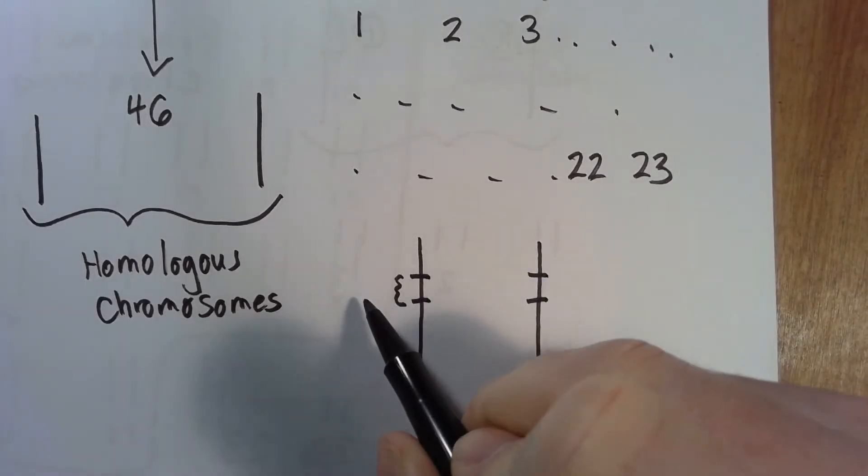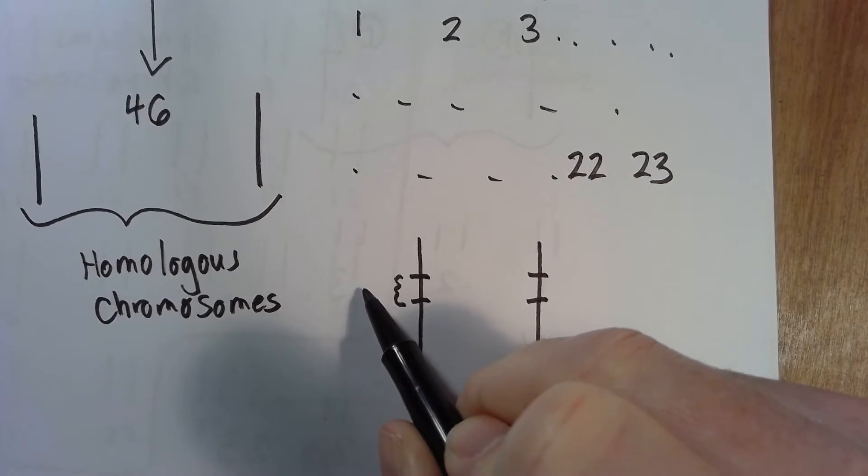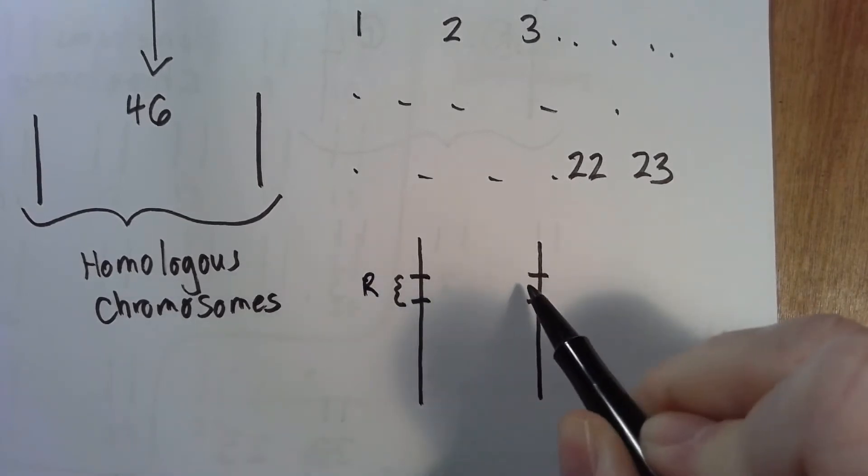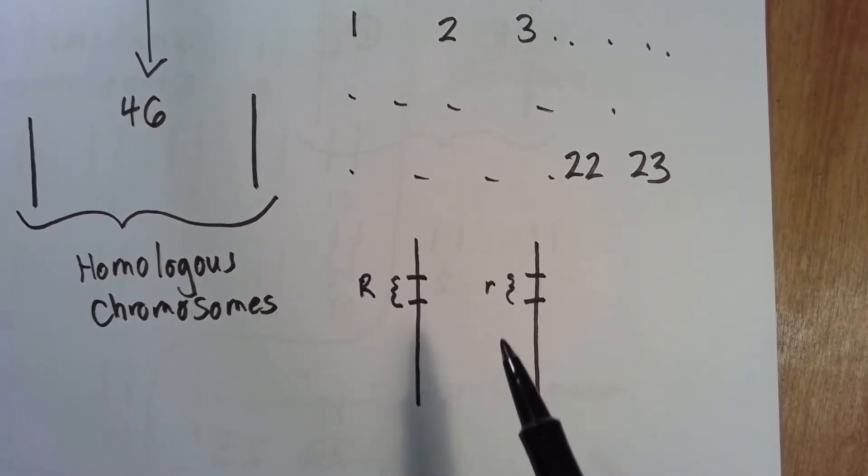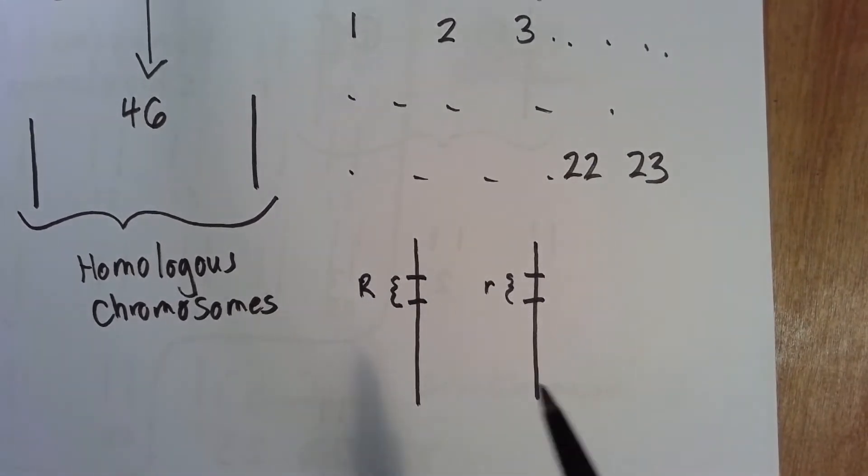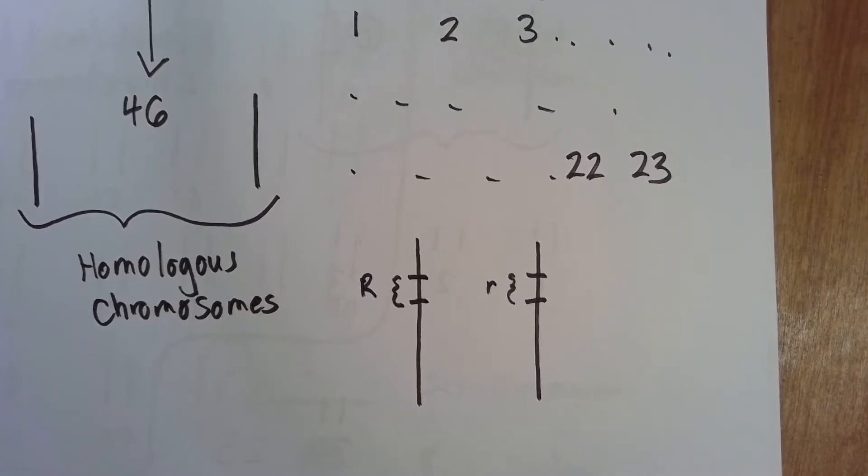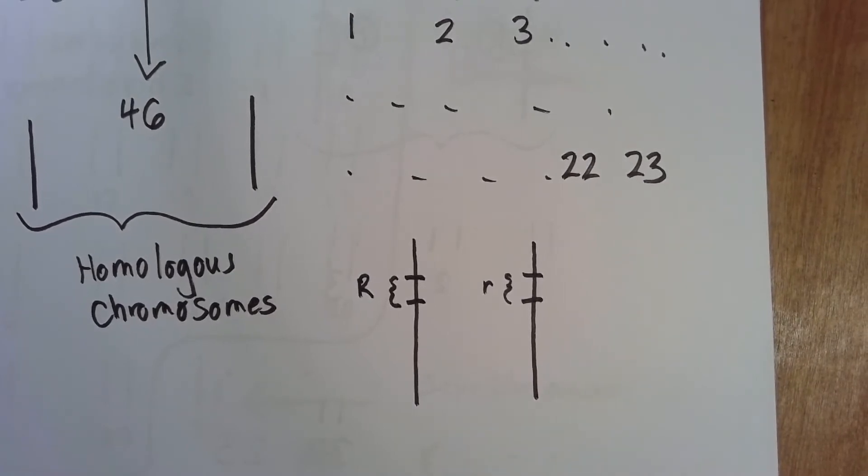Let's say this one is attached, and I believe it's recessive if it's attached, and this is different. Now, these are the alleles. Attached or not attached are the different types of the same gene, of the same trait.